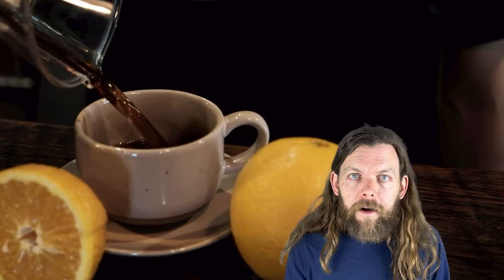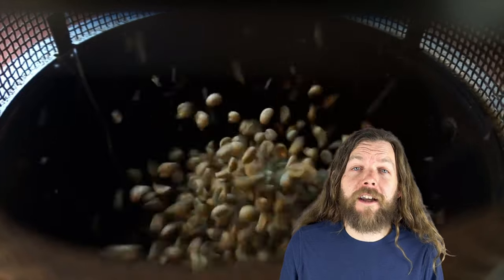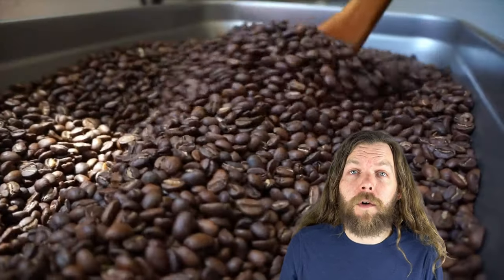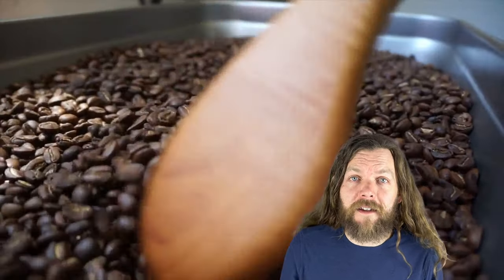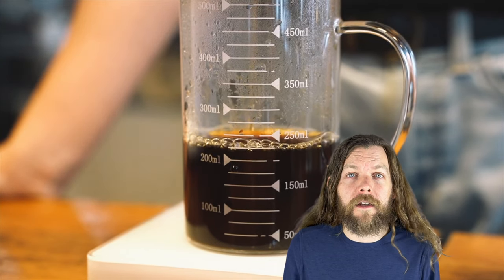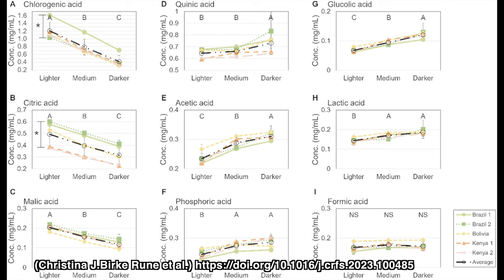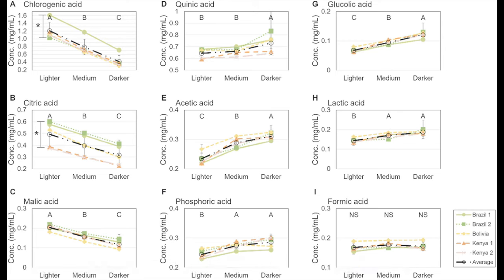Acidity is very important, but only when it's in balance. How dark a coffee is roasted actually has only a minor effect on the total acids present in the final brewed cup of coffee, but it dramatically alters the relative abundance of these acids. The amazing research by Christina J. Burke, Rune, and others at the University of Southern Denmark — link in the description — is illustrated in their graph. These are concentrations of acids graphed versus roast level.